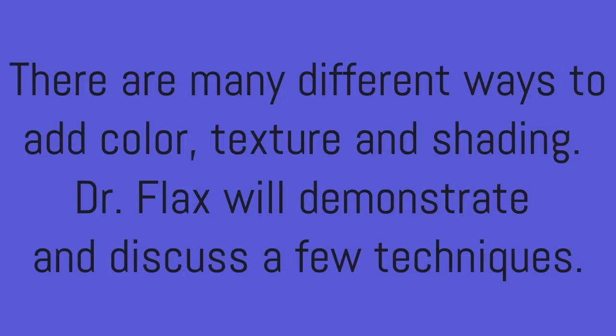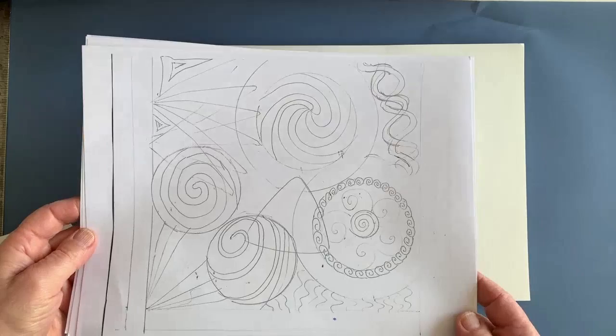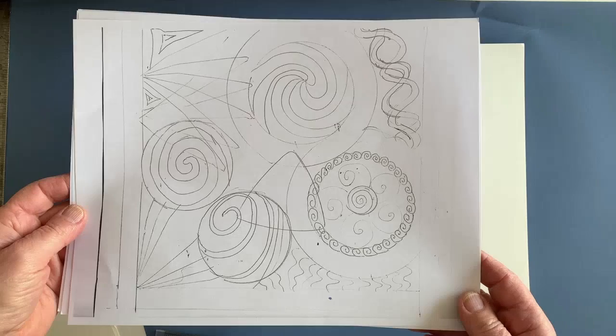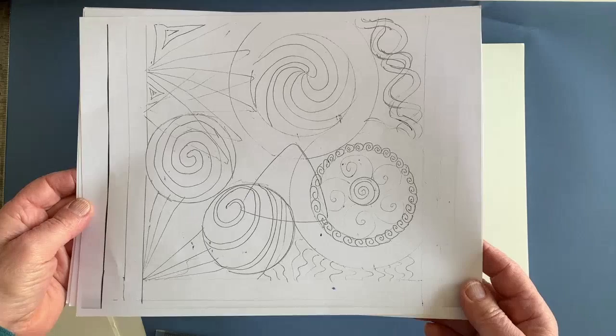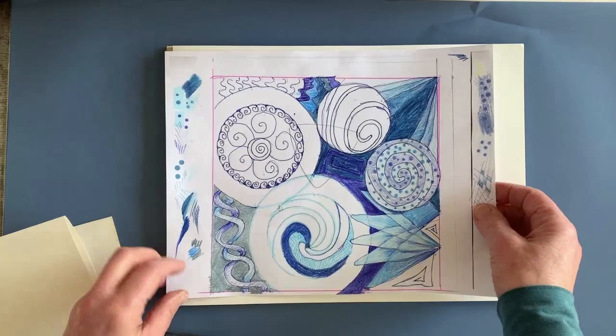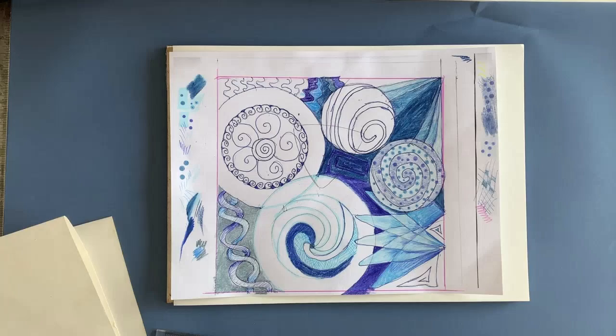This is the basic design that I made. And then I made a few copies with my copy machine. And that way I was able to trace it and try coloring it in different ways. I decided to do blue things using mixed media. And I wanted to talk about the techniques that I use.